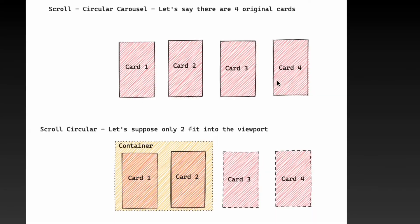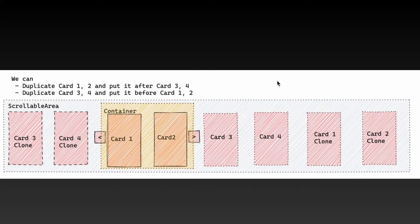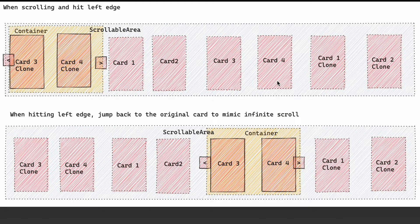Things get a little bit more interesting when we want to implement the circular carousel. Likewise, let's start with the setup. Say we have 4 cards, and suppose only 2 would fit into the container. In order to achieve infinite horizontal scrolling, let's duplicate card 3 and 4 and put them to the left of card 1. Then duplicate card 1 and 2 and put them after card 4. This way, when the user scrolls and hits the left edge of the scrollable area, we don't move the cards, but we use an instant scroll to scroll the container back to where the original card 3 is. Similarly, if the user scrolls and hits the right edge, we scroll the container back to where card 1 is.